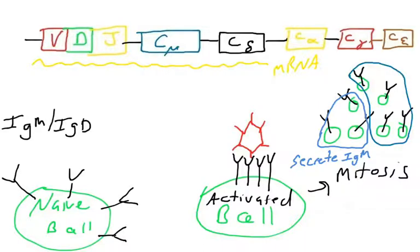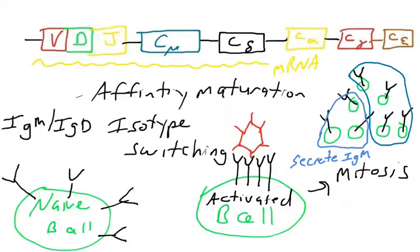But the other group of B cells will undergo two processes called affinity maturation and isotype switching. These processes are going to happen at the same time, and they're going to allow the antigen binding site to be improved so that you have higher affinity binding for the antigen. That's going to be covered in the next video. And the other process that's going to happen is isotype switching, where we're going to be making different types of antibodies. Though both of these processes are happening at the same time, I'm going to describe isotype switching first.